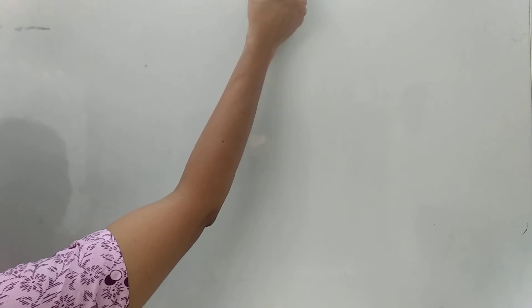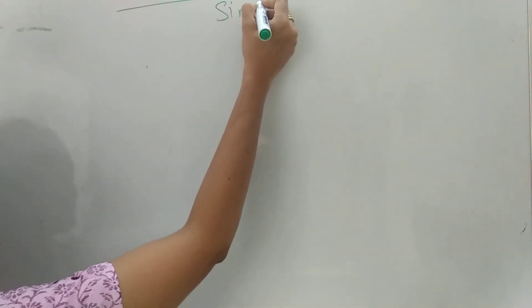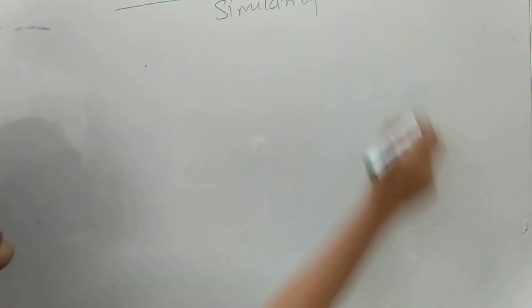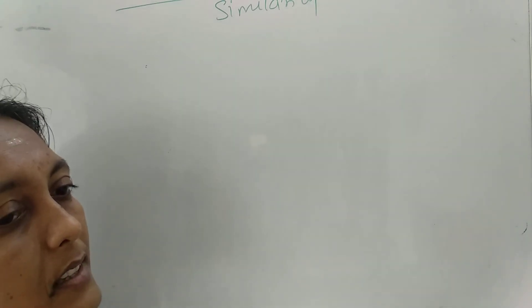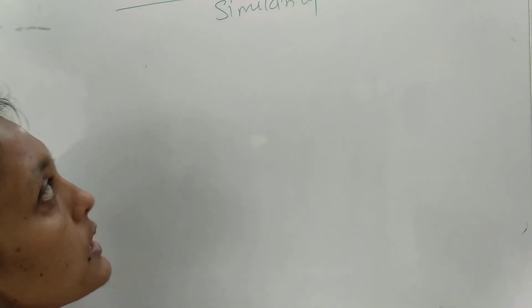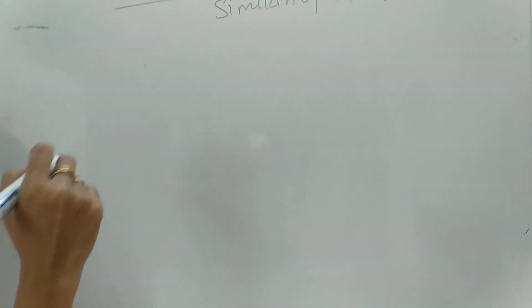The next property is correlation. What do we mean by correlation? Correlation means there is a relation or similarity between signals. If you want to relate something, there should be some similarity. In DSP, we are considering the similarity of two signals.